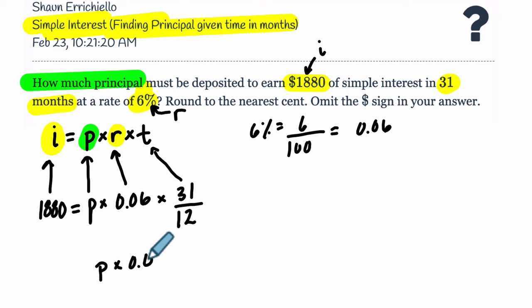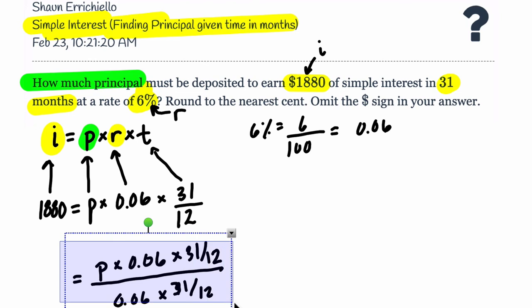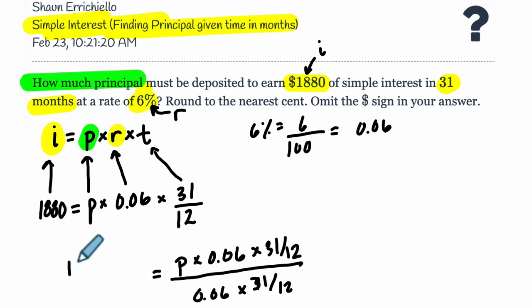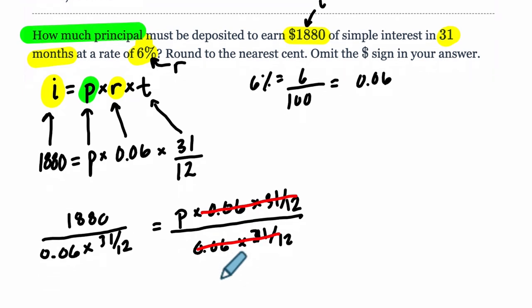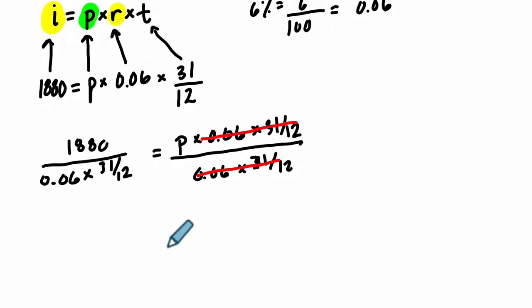Sometimes you get a really nasty decimal here, and you might not want to write it out like a repeating decimal. So what I recommend is to consider just writing this. You're going to divide both sides of your equation, you're solving for p, by this product. That means these two factors multiplied. We're going to divide 1880 by that same product. So 0.06 times 31 over 12. Just bear with me.